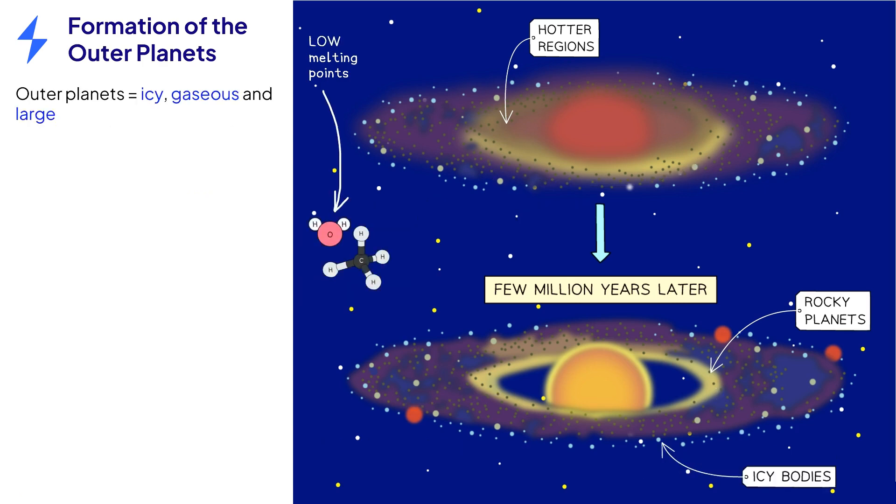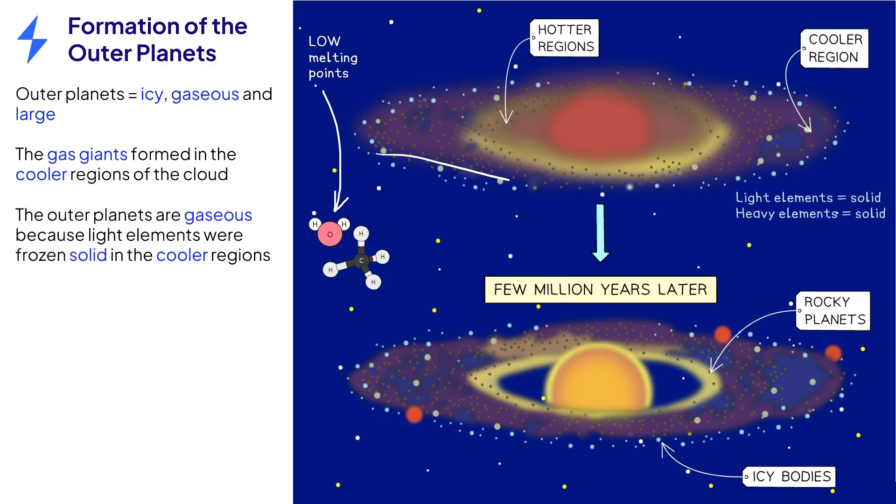The outer planets are large and formed from molecules with low melting points such as water and methane. This is because the temperature was much colder in the regions further from the Sun. In these regions, lighter elements would have been frozen solid.